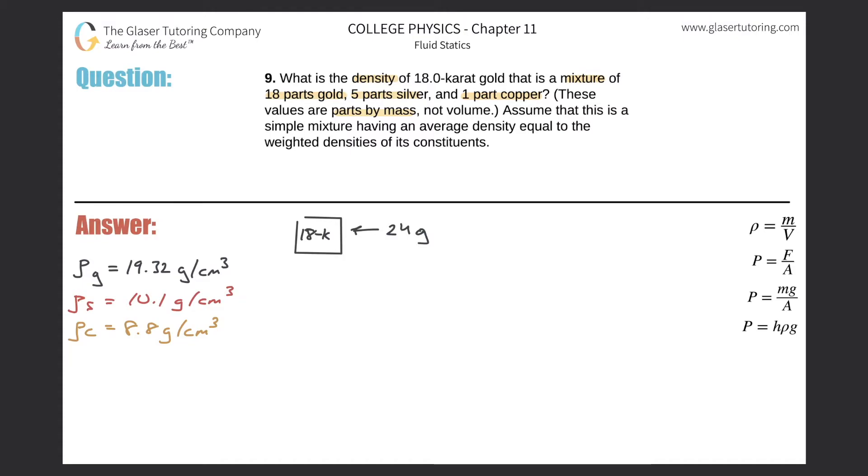So what that means to me is if you add those together, 18 plus 5 plus 1, you get 24. So if I assume I have a 24 gram sample, that means 18 parts of this 24 grams is going to be 18 grams of gold, five grams of silver, and one gram of copper.